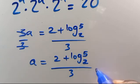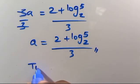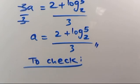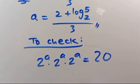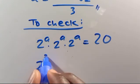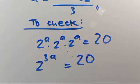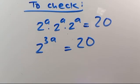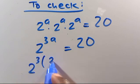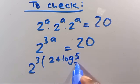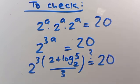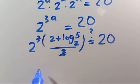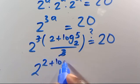Dividing both sides by 3, this cancels out, and we have A equals 2 plus log₂5, all over 3. So this is the final answer for the value of A. To verify, we substitute back: 2 to the power of A times 2 to the power of A times 2 to the power of A equals 20. Simplifying, we have 2 to the power of 3A equals 20. So we compute 2 to the power of 3 times the quantity 2 plus log₂5 over 3.